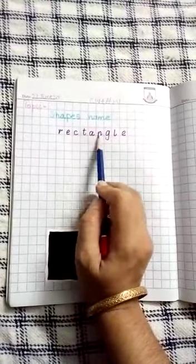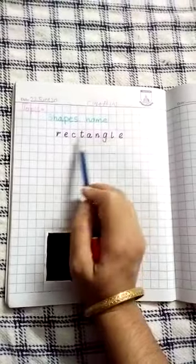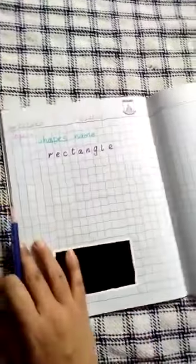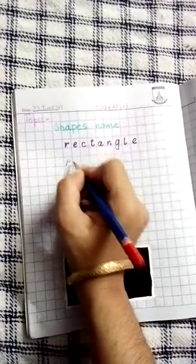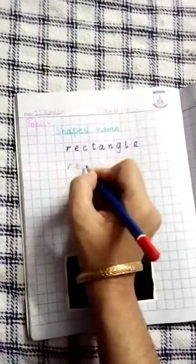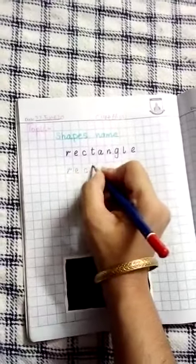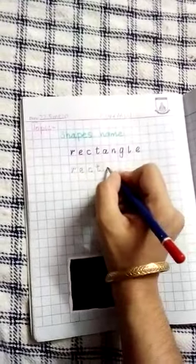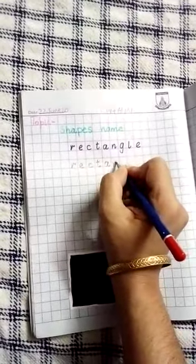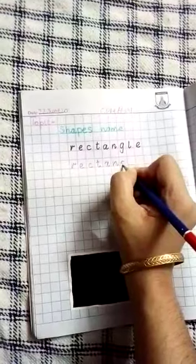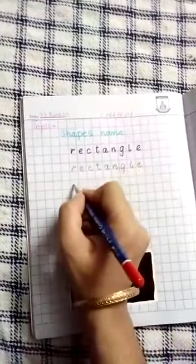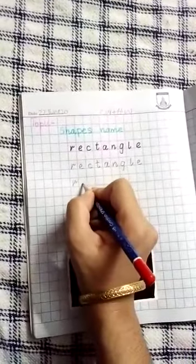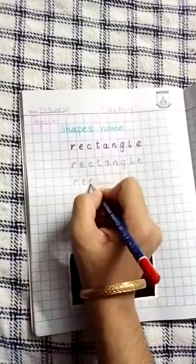R-E-C-T rect, A-N-N rect, and G-L legal, rectangle. Okay, now start the spelling of rectangle: R-R-E-C-T rect, A-N-N-G-L legal, rectangle. Write it again: R-E-C-T rect, A-N-N-G-L legal, rectangle.